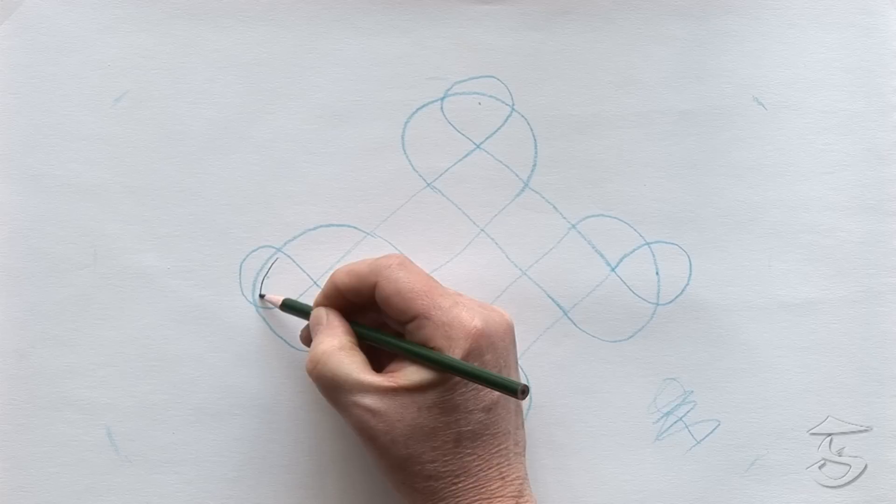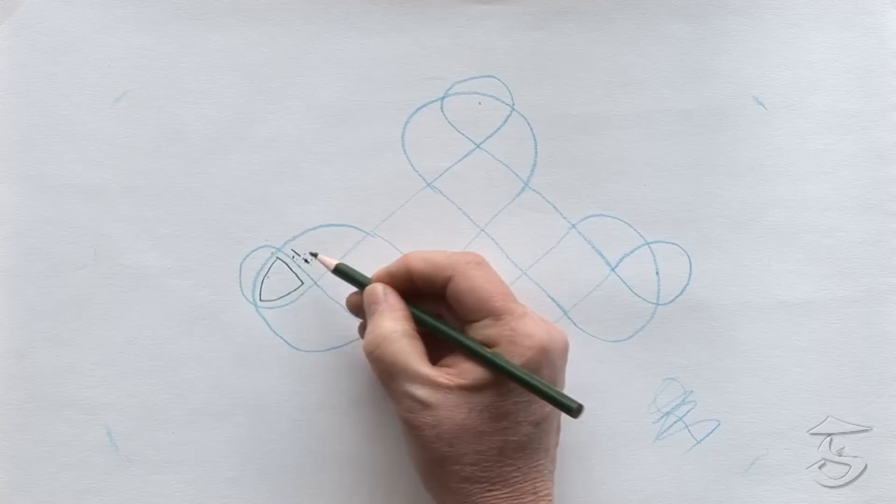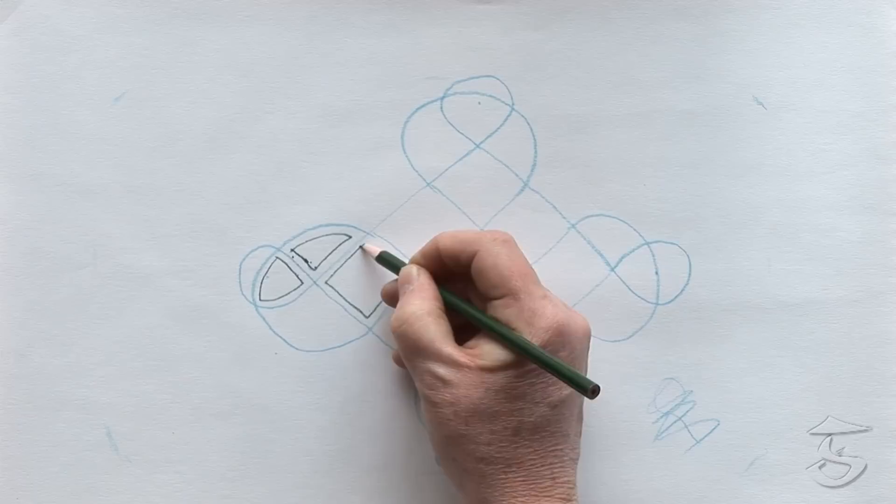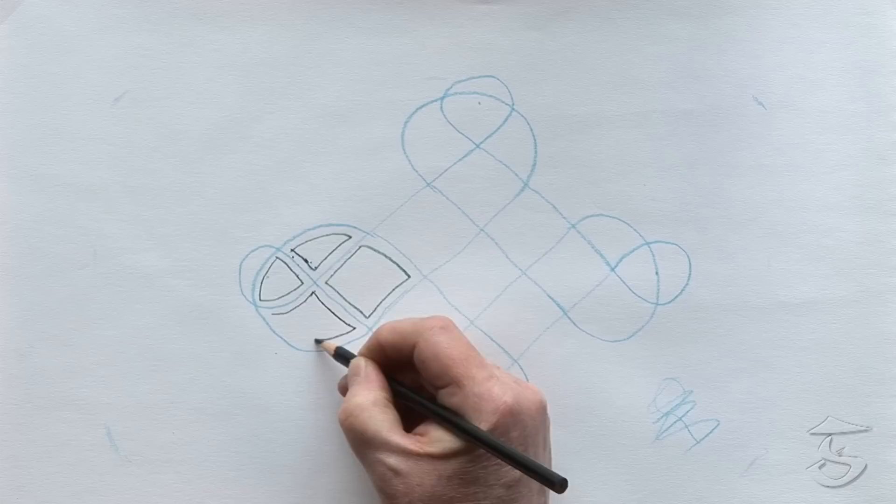We switch to a darker color and we then start the process of paralleling the inside lines. I'm going to switch pencils. There we go. A little different color.